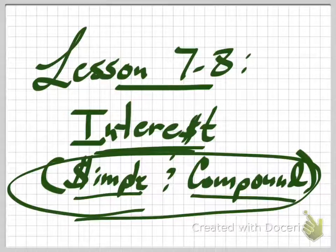Compound interest is a little bit more complicated. It's an exponential function. What happens with compound interest is you find a little bit of interest each time, and it gets added in as you go, so you end up with a greater amount of interest.